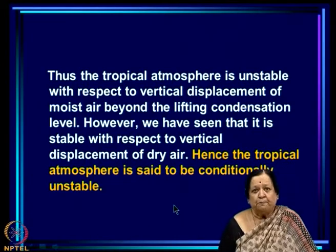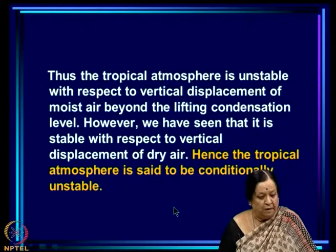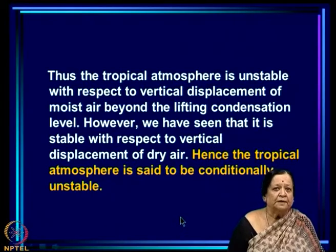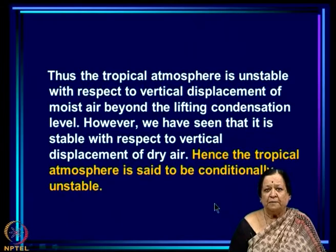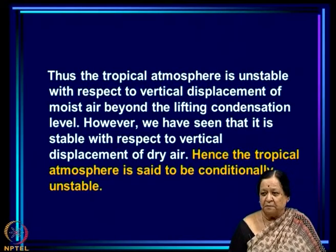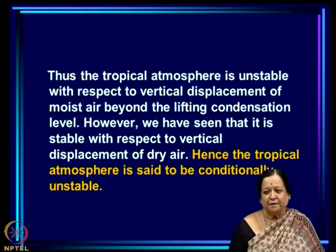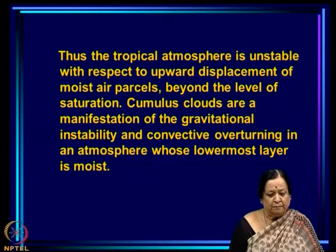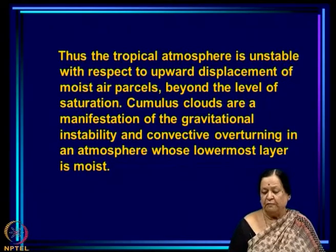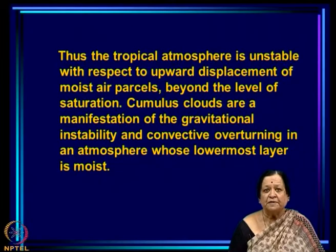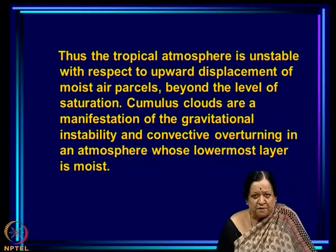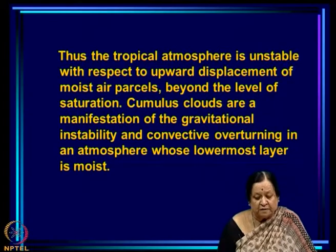This means the tropical atmosphere is unstable with respect to vertical displacement of moist air beyond the lifting condensation level, but stable with respect to dry air. This is called conditional instability. The tropical atmosphere is conditionally unstable — if the air is dry it is stable; if the air is moist it is unstable. Cumulus clouds are a manifestation of this gravitational instability and convective overturning in an atmosphere whose lowermost layer is moist.